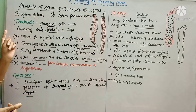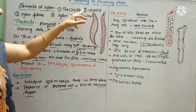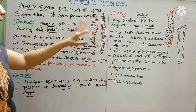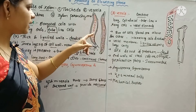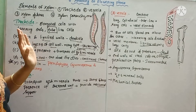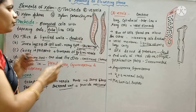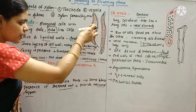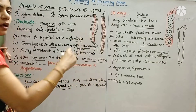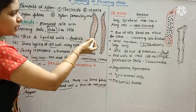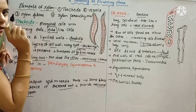The first element is tracheids. Tracheids are elongated cells with lignified cell walls, which are much thicker. Tracheids are dead cells. They form a continuous compact structure, so they can transport water and minerals. The cell wall has cross-sectional area, and the inner layers of the cell wall have some thickness.